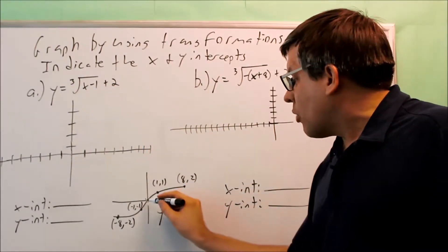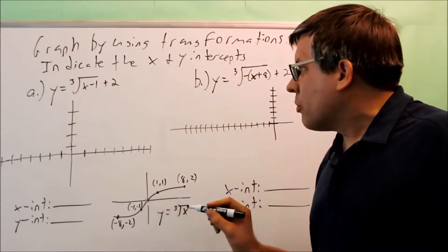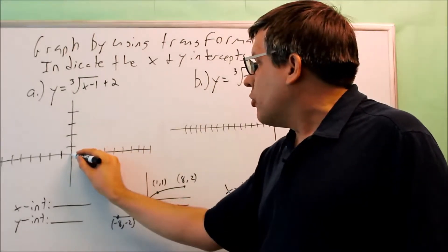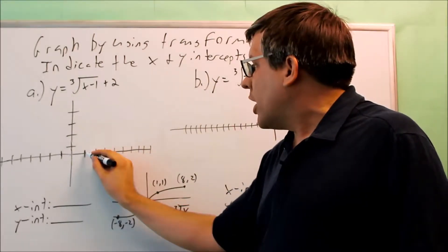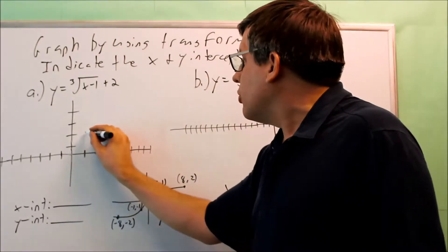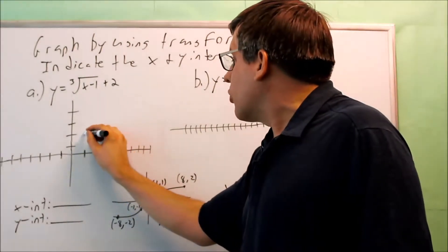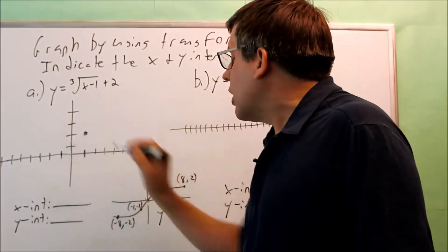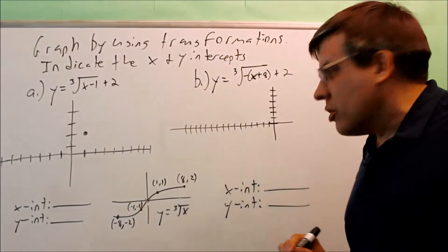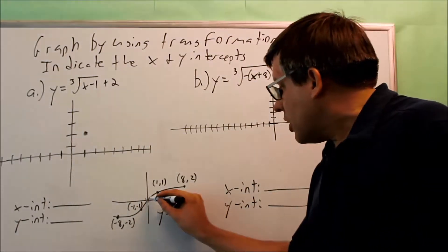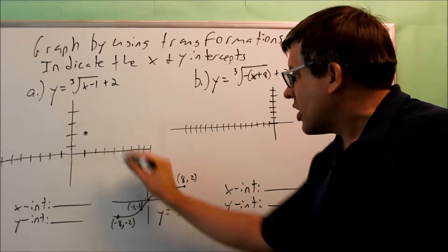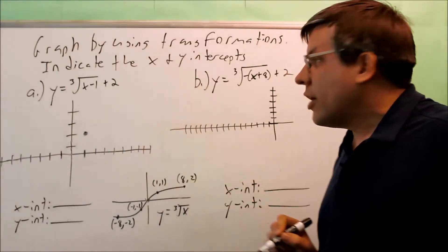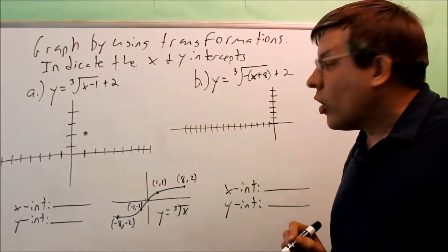I always start with the zero zero point. The zero zero point would be right here. I'm going to move it one to the right and up two units, which means this is going to be my new zero zero. So normally it would be here, and now the center of the graph is going to be there at one, two.